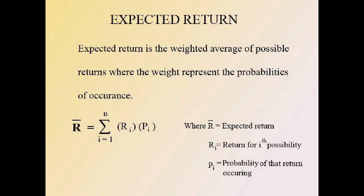Now let's see how to calculate the expected return of an investment. Expected return is the weighted average of possible returns, where the weights represent the probabilities of occurrence. It can be calculated using the formula: R̄ = Σ(i=1 to n) ri × pi, where R̄ is the expected return, ri is the return for the i-th possibility, and pi is the probability of that return occurring.